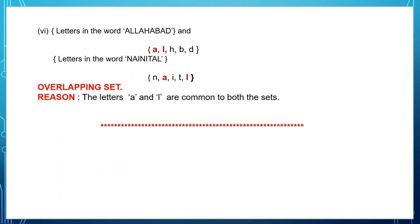The last one: letters in the word 'Allahabad' are A, L, H, B and D. Letters in the word 'Nital' are N, A, I, T and L. These are overlapping sets because the letters A and L are common to both sets. So when elements are common to both sets they are overlapping sets, and when nothing is common they are disjoint sets.